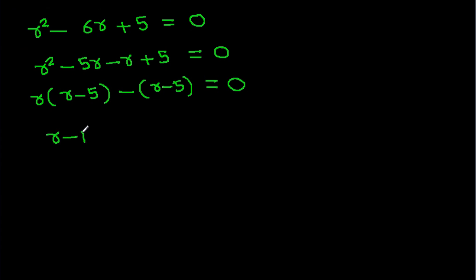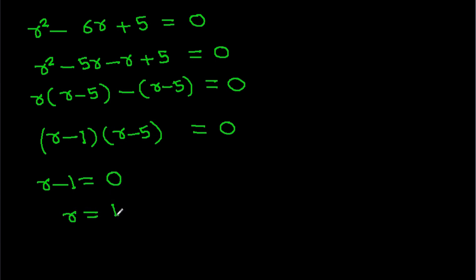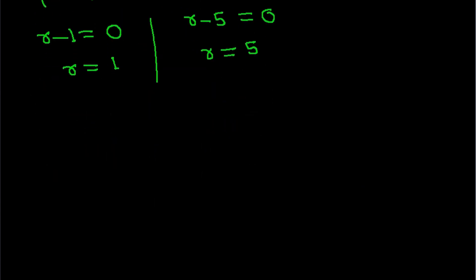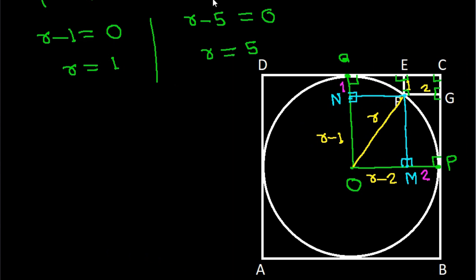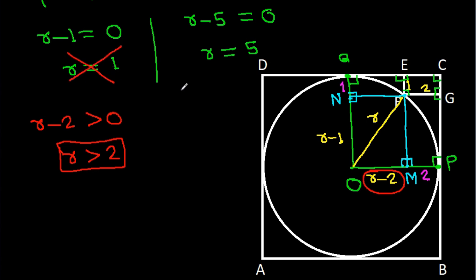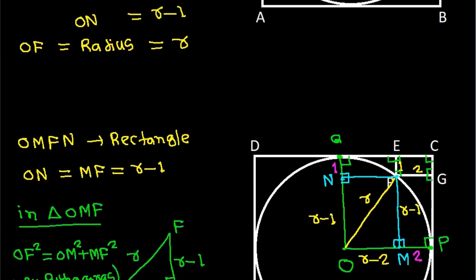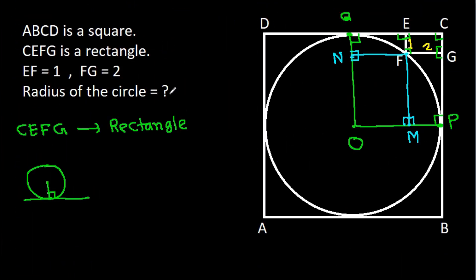Therefore either R minus 1 equals 0, giving R equals 1, or R minus 5 equals 0, giving R equals 5. However, since OM equals R minus 2 must be positive, R must be greater than 2. So R cannot equal 1, and therefore R equals 5. The radius is 5.